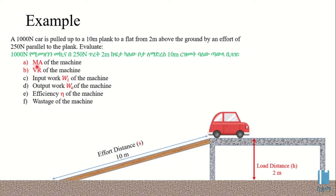We are asked to find: A, the mechanical advantage of the machine; B, the velocity ratio of the machine. So here we have the mechanical advantage and the velocity ratio. We also need to find the input work of the machine.